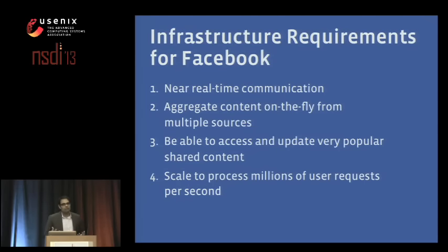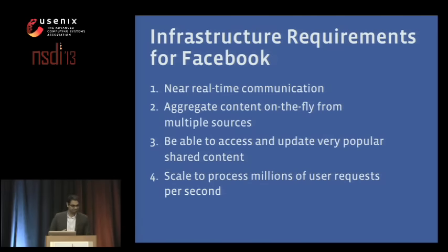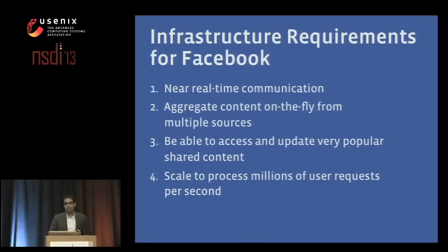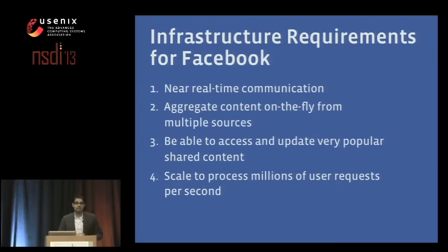What kind of infrastructure requirements do we have at Facebook? For any system at Facebook, these are the common themes we tend to see. One is that we tend to need near real-time communication — when you send a message, we need to be able to see it. We need to aggregate content on the fly from multiple disparate sources. Take a look at your newsfeed. We need to be able to share, access, and update very popular content, like President Obama's status updates. And we need to be able to scale to process millions of user requests per second.